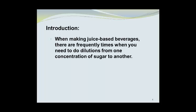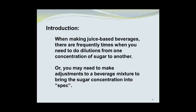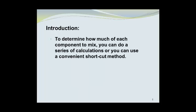When making juice-based beverages, there are frequently times when you need to do dilutions from one concentration of sugar to another, or you may need to make adjustments to a beverage mixture to bring the sugar concentration into specification. To determine how much of each component to mix, you can do a series of calculations or you can use a convenient shortcut method. This shortcut method is called Pearson's Square.